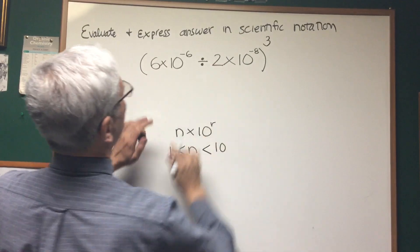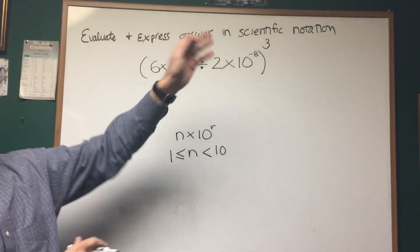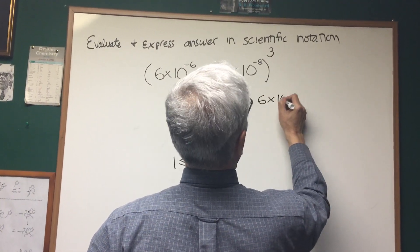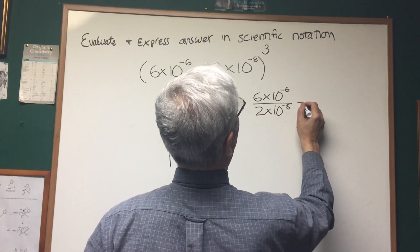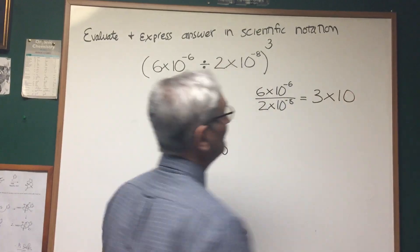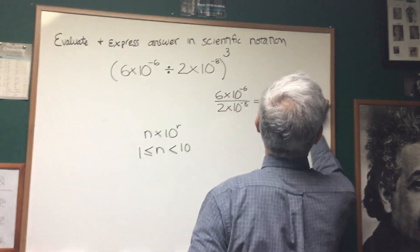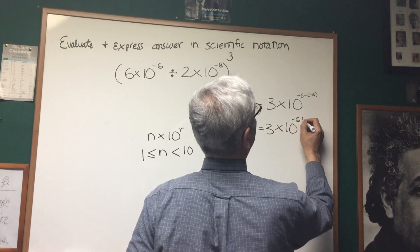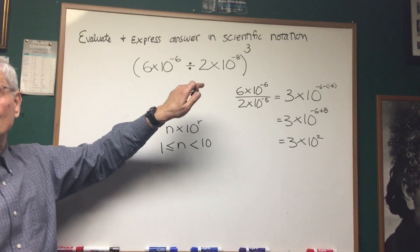Let's proceed. We have 6 times 10 to the negative 6 divided by 2 times 10 to the negative 8, that whole expression taken to the third power. By order of operations, we handle the parentheses first. 6 divided by 2 is 3. For division of exponents, we subtract: negative 6 minus negative 8 equals negative 6 plus 8, which is 2. So inside the parentheses we get 3 times 10 squared.